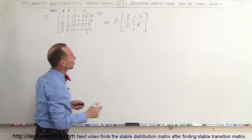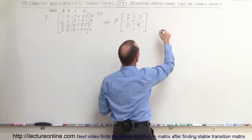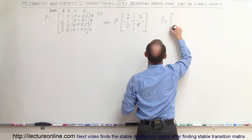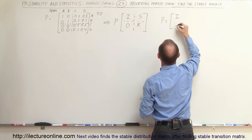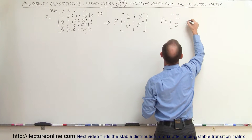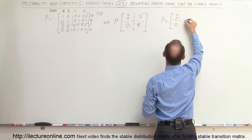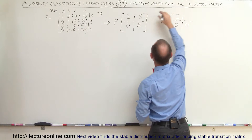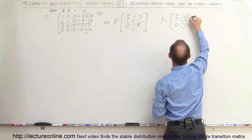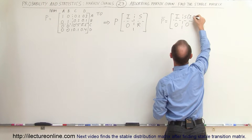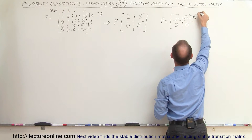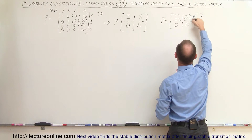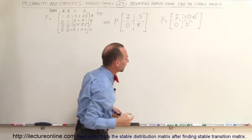We know that the stable matrix can be found by saying that this will be the I matrix, this will become zero, this will become zero, and this portion that used to be S is now going to be S times the quantity I minus R to the negative one — in other words, the inverse of I minus R multiplied times S.